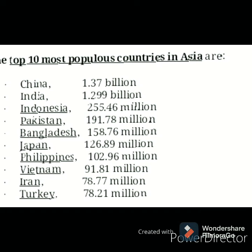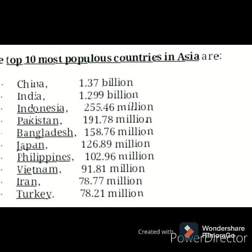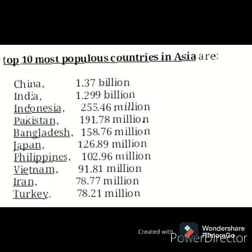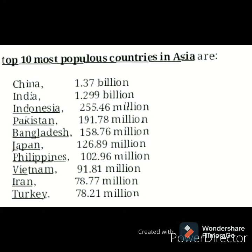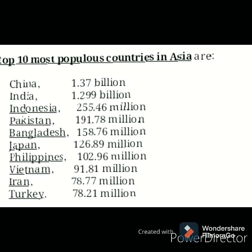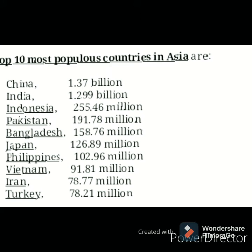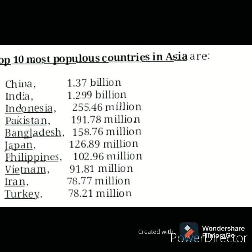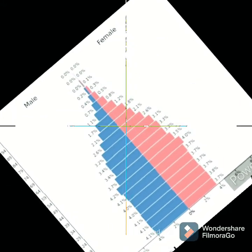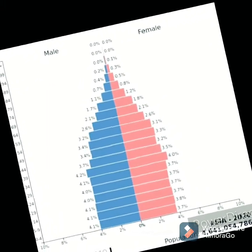Next is our country, the Philippines, which has 102.96 million, then Vietnam with 91.81 million, Iran with 78.77 million, and lastly Turkey with 78.21 million. Now let's proceed to the demographic profile of Asia.